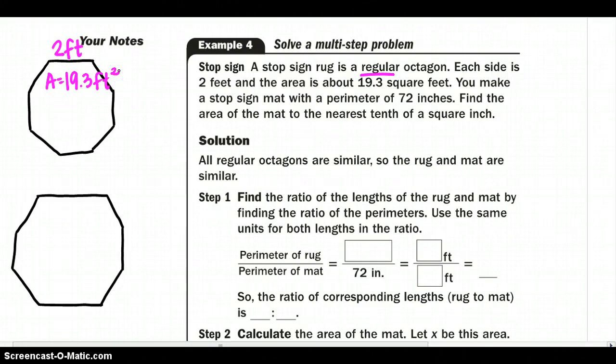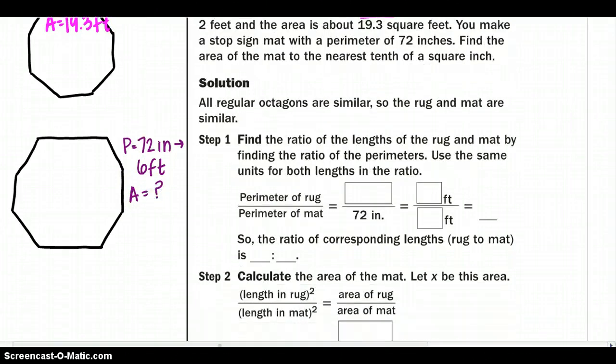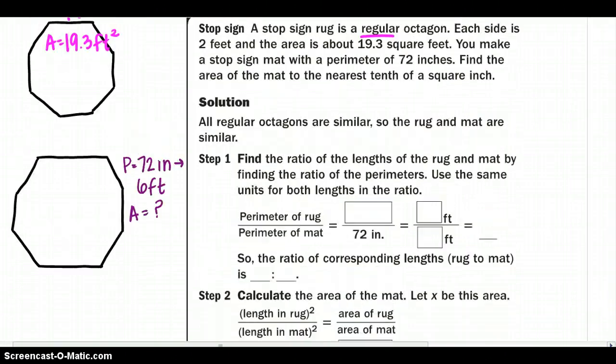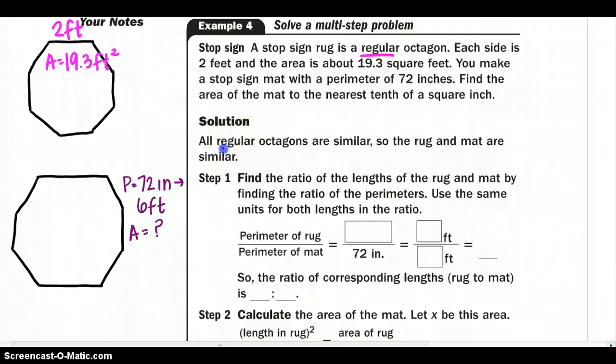You make a stop sign mat with the perimeter. So our perimeter over here is 72 inches. And since they're not in the same units, let's go ahead and put this perimeter in feet. So I'm going to divide it by 12. So I get 6 feet. So let's use that 6 feet for the perimeter. We want to find the area of the mat to the nearest tenth. All regular octagons are of course similar, and that's what we want to get to so we can use our ratios.